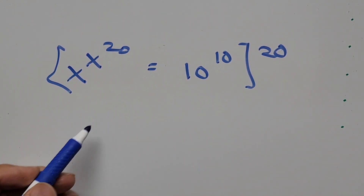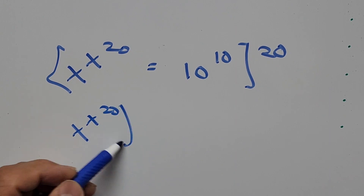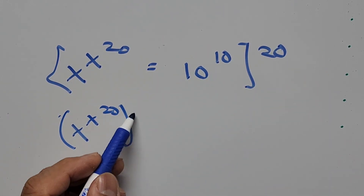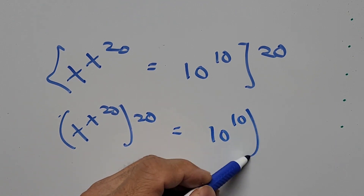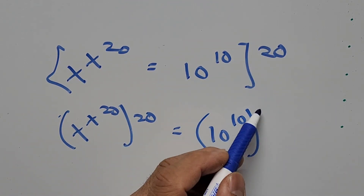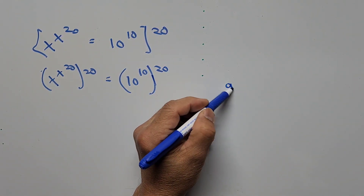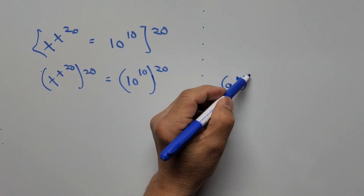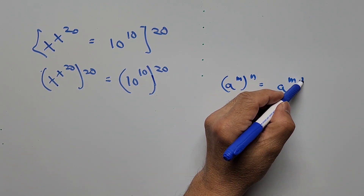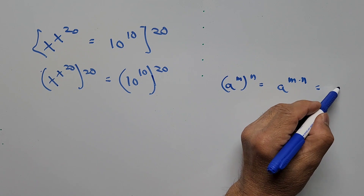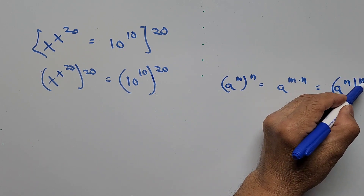The equation becomes: x to the power of x to the power of 20, raised to the 20th power, equals 10 to the power of 10 raised to the power of 20. From here we'll be using the exponent rule: a raised to m, raised to n, is equal to a raised to m times n — or equivalently, a raised to n raised to m.